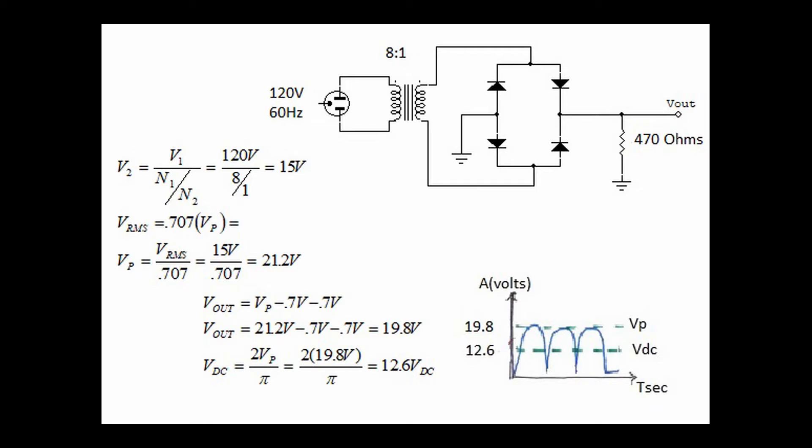The voltage that actually gets delivered to the load, we're going to call V_out. It's found by taking the peak minus two diode drops, so the voltage out is equal to 19.8 volts. Then we go ahead and find voltage DC by taking two times the peak, or V_out, and divided by pi. So the actual voltage DC is 12.6 volts. The advantage of using a bridge rectifier is that we use the full secondary windings, which means that the voltage output is higher, and also the DC voltage is higher.